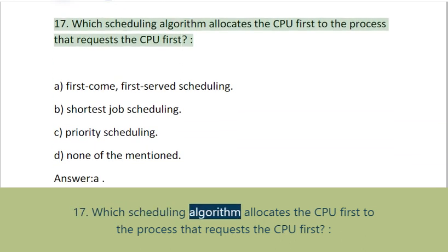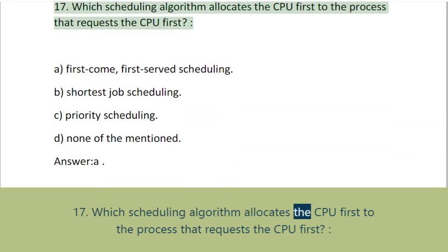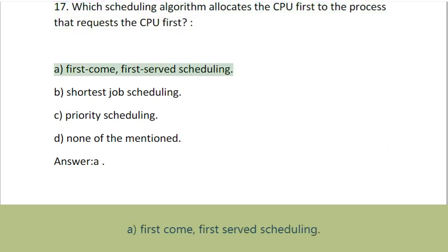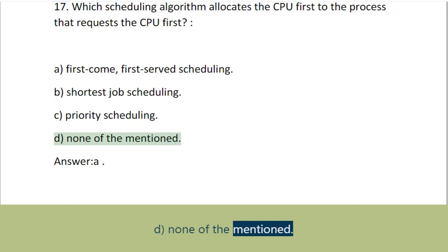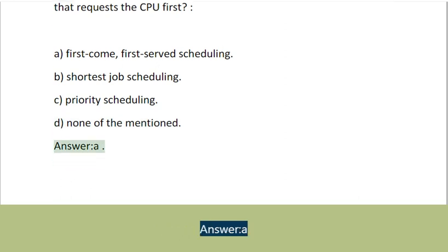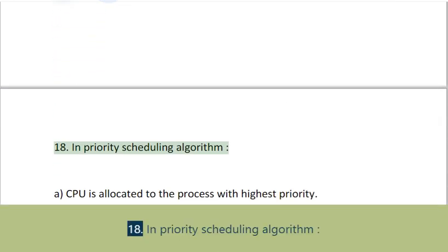Question 17: Which scheduling algorithm allocates the CPU first to the process that requests the CPU first? A. First come, first served scheduling, B. Shortest job scheduling, C. Priority scheduling, D. None of the mentioned. Answer: A.